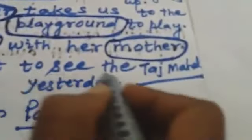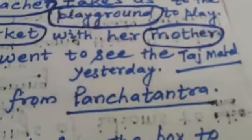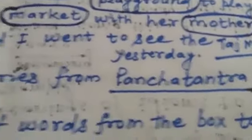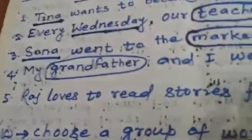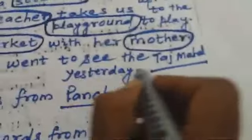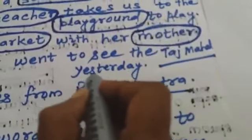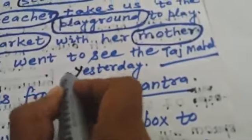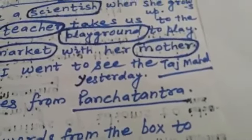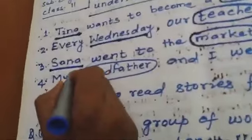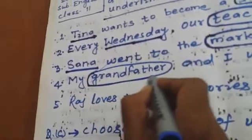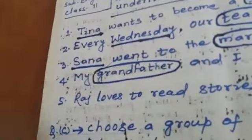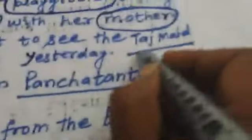Sentence 4: 'My grandfather and I went to see the Taj Mahal yesterday.' My grandfather and I went to see the Taj Mahal yesterday. Here, 'grandfather' is a common noun — we circle it. 'Taj Mahal' is a proper noun — we underline it.